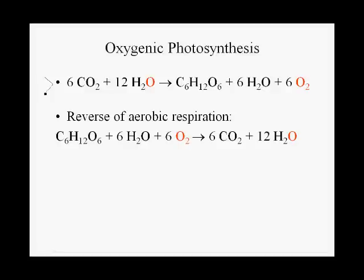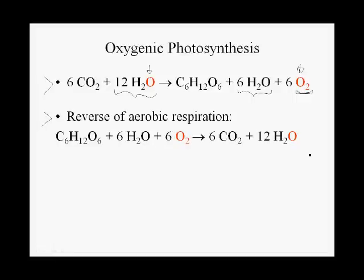This equation is the balanced chemical reaction for oxygenic photosynthesis. You will notice there is water on both sides of the equation. The oxygen atoms in water on the left side and the oxygen atoms in oxygen gas on the right side indicate that the oxygen atoms released as oxygen gas through photosynthesis come from water, not from carbon dioxide. This is exactly the reverse of aerobic respiration — in aerobic respiration, oxygen gas is reduced to form water.